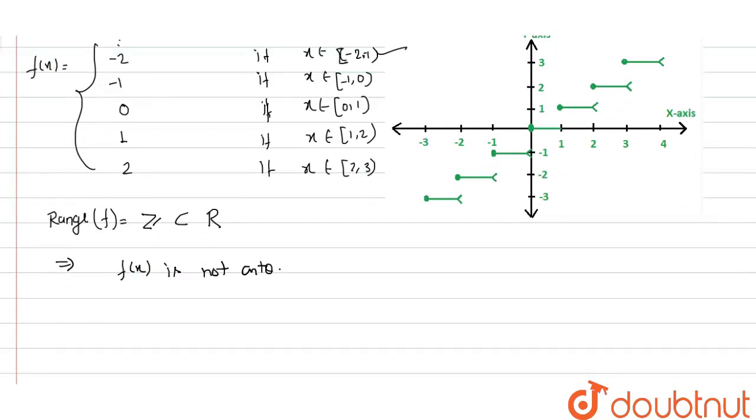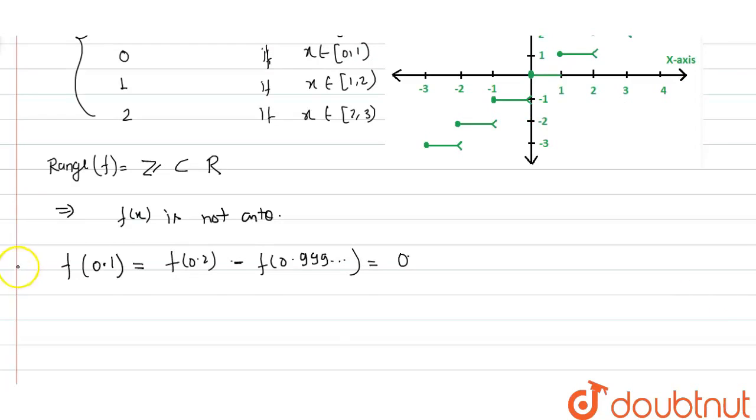Similarly, to show the function is not one-one, we can see that f(0.1) = f(0.2) = 0, but 0.1 ≠ 0.2 (or 0.9999). This implies that f(x) is not one-one.